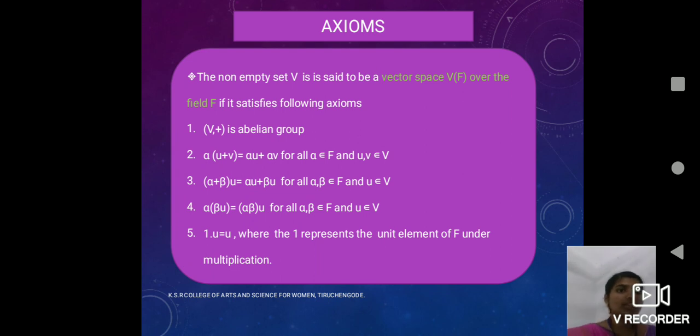The non-empty set V is said to be a vector space V over the field F if it satisfies the following conditions. First, V is a vector space and under addition is an Abelian group. Second, alpha into U plus V is equal to alpha U plus alpha V. Third, alpha plus beta into U which is equal to alpha U plus beta U. Fourth, alpha into beta U which is equal to alpha beta into U. Here, alpha and beta are said to be the scalars which belong to the field F. And U and V are said to be vectors which belong to the vector space V. Last one, 1 dot U is equal to U where 1 is the unit element of F under multiplication.